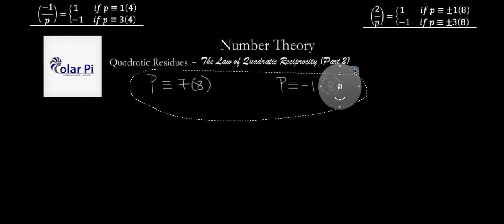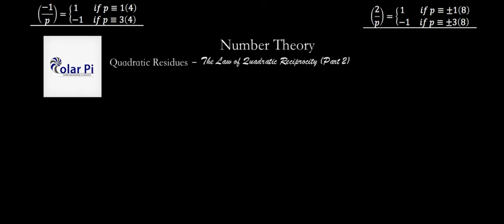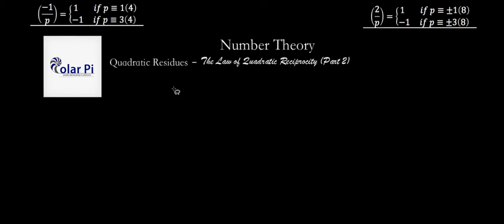The second note is about distinguishing between the law of quadratic reciprocity and the work we did prior to it. Before we introduced the law of quadratic reciprocity in part one, we looked at (A/P), trying to answer the question: given an odd prime P, is A a residue mod P or a non-residue mod P? But what the law of quadratic reciprocity is trying to answer is: given A, for what kind of prime P is A a residue and a non-residue?